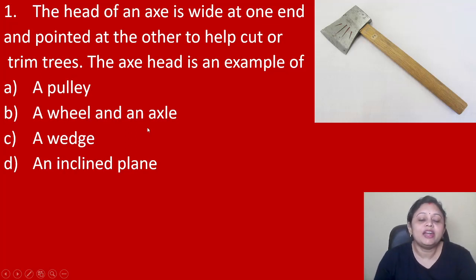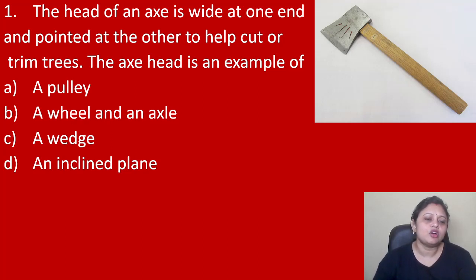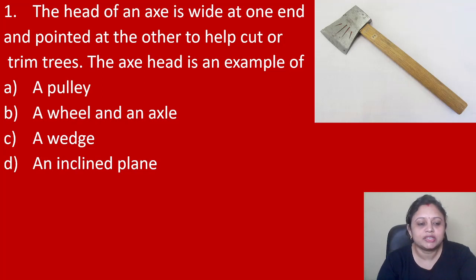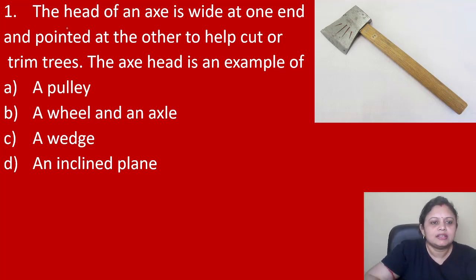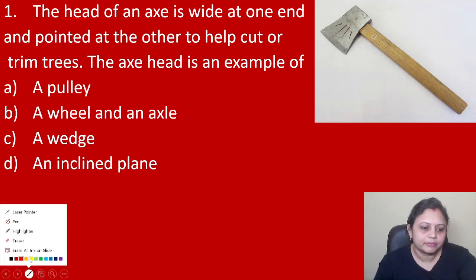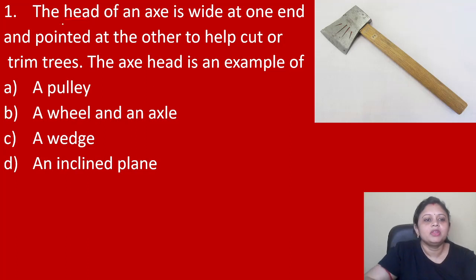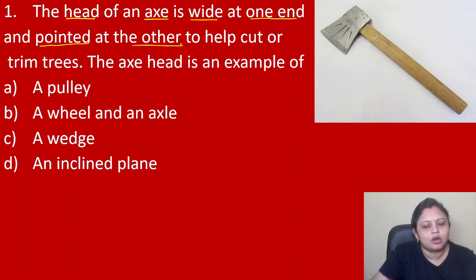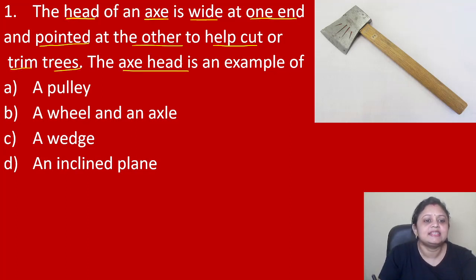Our first question: the head of an axe is wide at one end and pointed at the other to help cut and trim trees. The axe head is an example of: option A pulley, B wheel and axle, C wedge, D inclined plane. So the head of an axe is wide at one end and pointed at the other, so that it helps us to cut and trim the trees. So the axe head is an example of what?